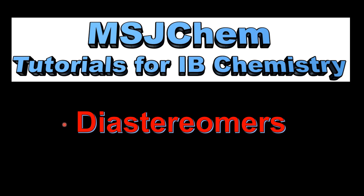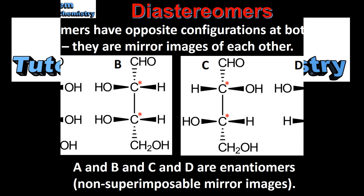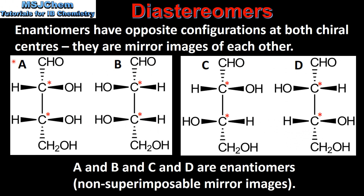This is MSJChem. In this video I'll be looking at diastereomers. We'll start by looking at the four stereoisomers of 2,3,4-trihydroxybutanal. As you can see, each stereoisomer has two chiral carbons or chiral centers.